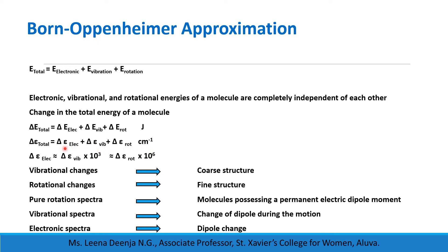The electronic energy change is much greater than the vibrational energy change, and the vibrational energy change is much greater than the rotational energy change. We can write: Δε_electronic ≈ Δε_vibrational × 10³ ≈ Δε_rotational × 10⁶. The vibrational changes may produce a coarse structure and rotational changes a fine structure on the spectrum of an electronic transition.